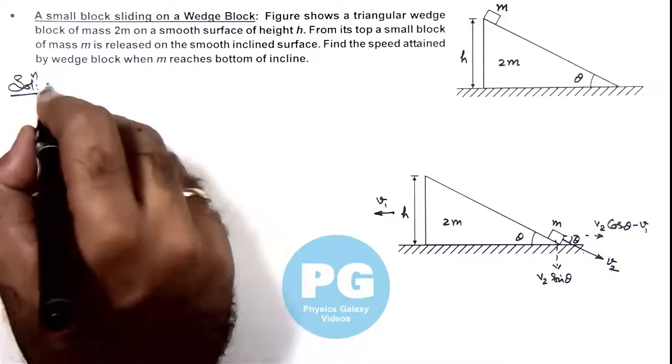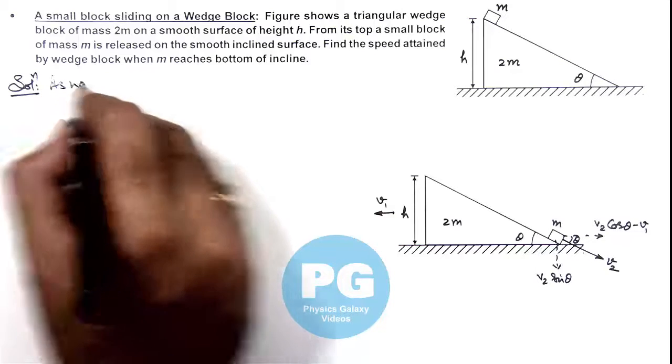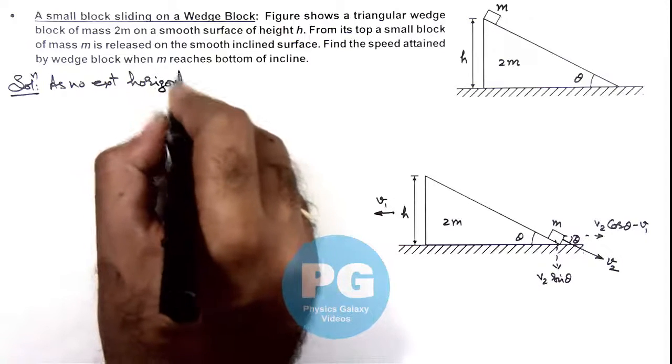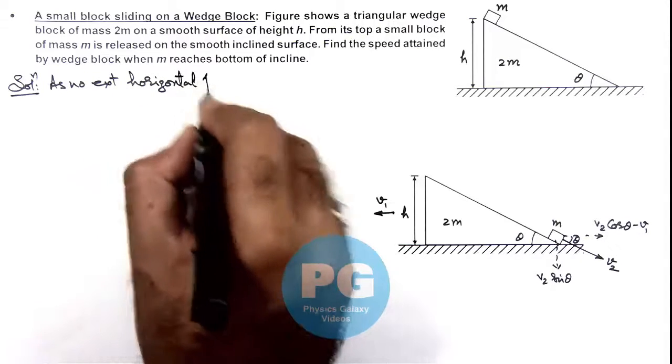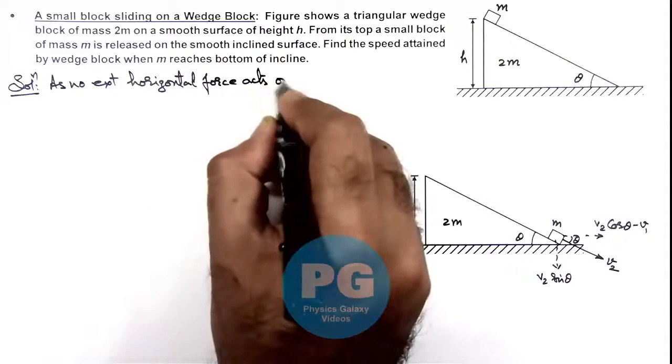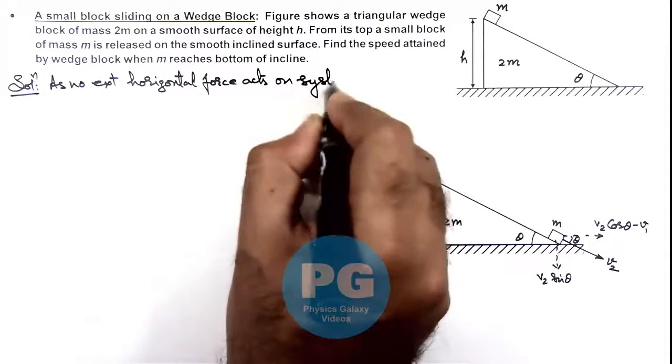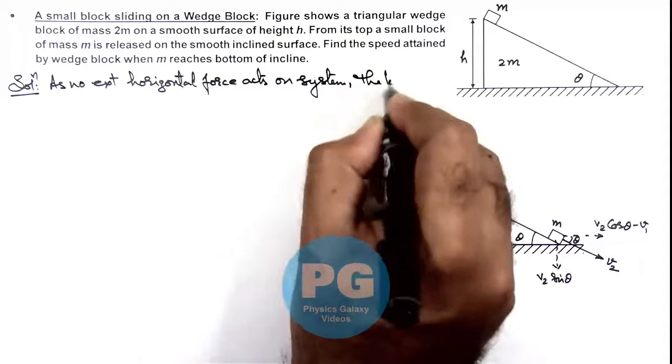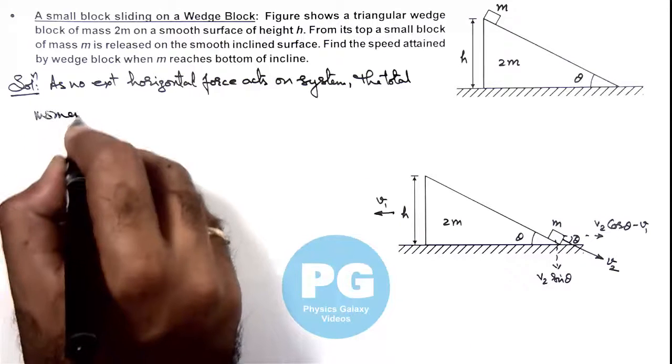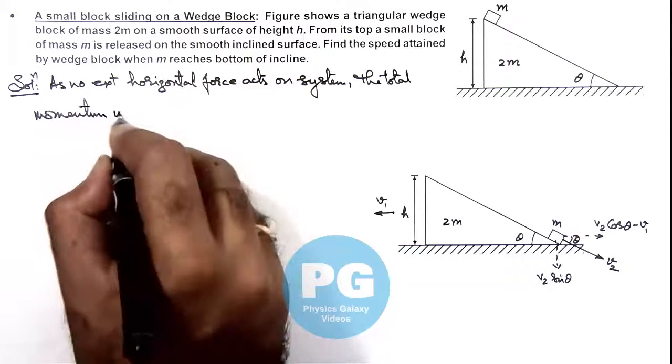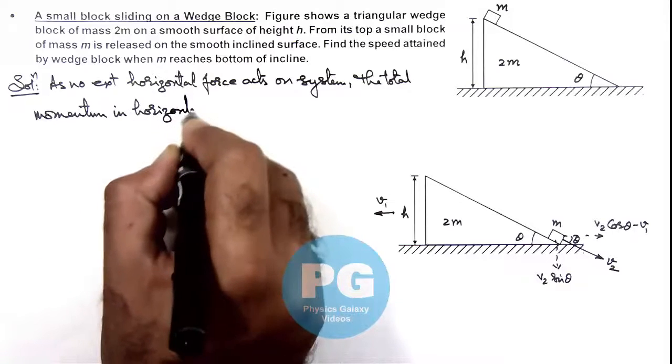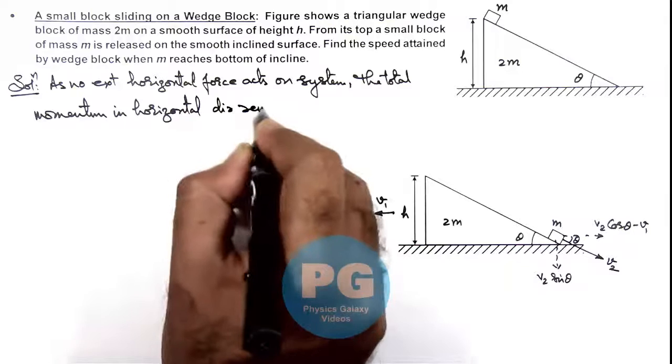So here we can write as no external horizontal force on system, the total momentum in horizontal direction remain conserved.